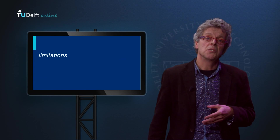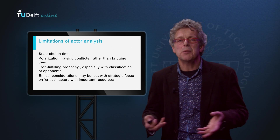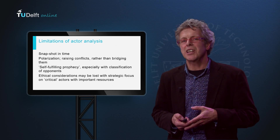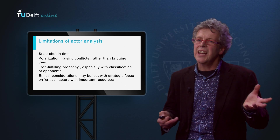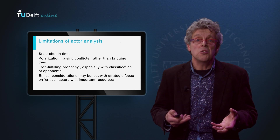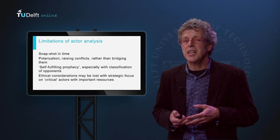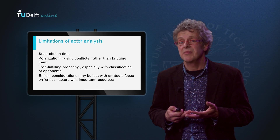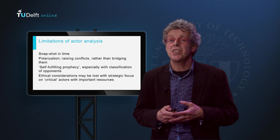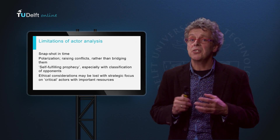Finally, I want to look at the limitations. Doing these kinds of actor network studies and the sustainability of the outcomes of these analyses can be problematic. The first thing you should realize is that you are making a snapshot in time — actor networks and the relations between actors are dynamic. Moreover, people and parties change position as they get new insights, learning both about the content of the problem and about the perspectives and motives of other actors. The danger is that these tables and graphs are abused for polarization, explicating points of difference and conflicts rather than focusing on how to bridge these differences. There is a severe risk of self-fulfilling prophecy, especially with classification of opponents — once you are considered an opponent, you will remain an opponent and little constructive dialogue is possible.